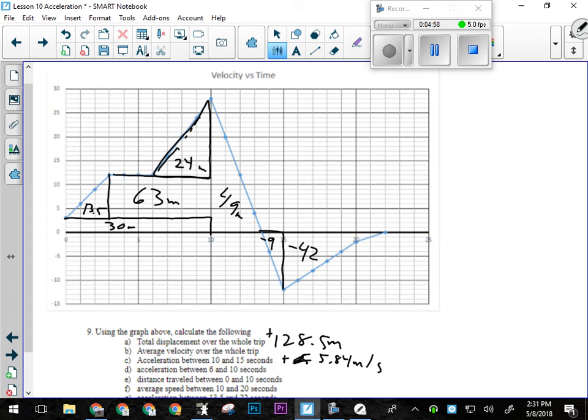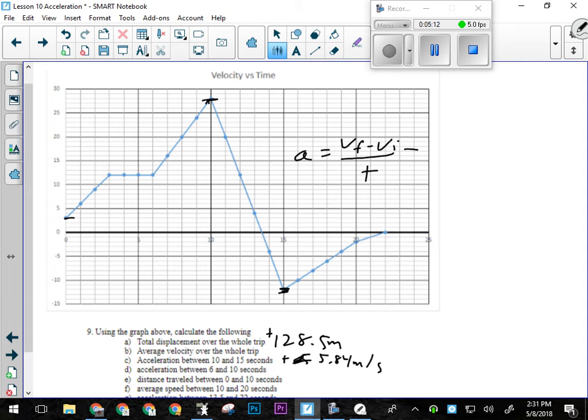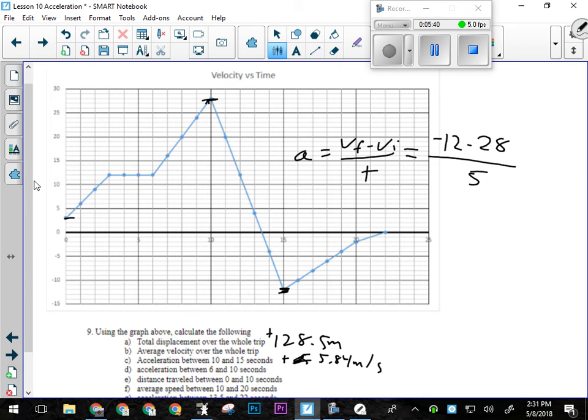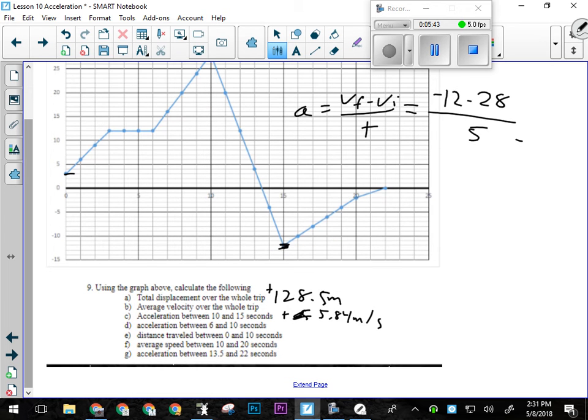For part C, average acceleration between 10 and 15 seconds. So now we'll get rid of all of our shapes here. 10 seconds starts right here, 15 seconds to here. Acceleration is VF minus VI over T. So my final velocity is negative 12. My initial velocity was 28. And that took 5 seconds. So negative 12 minus 28 divided by 5, so it's negative 8 meters per second squared.